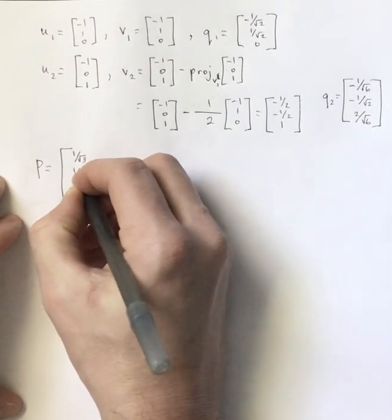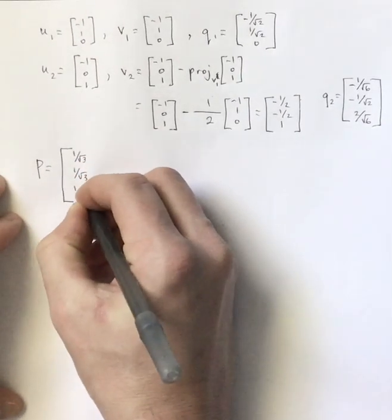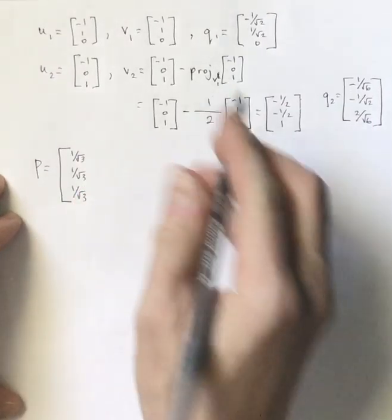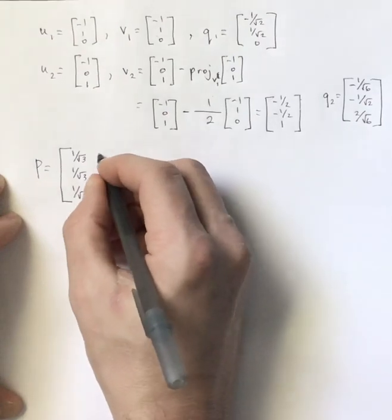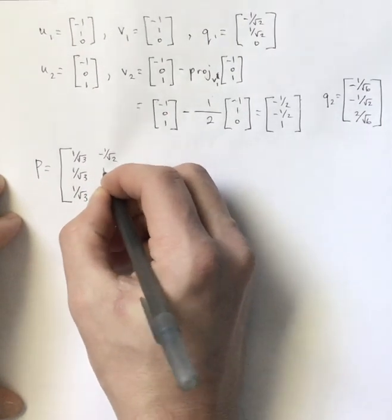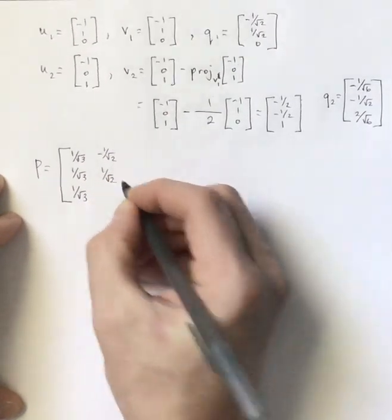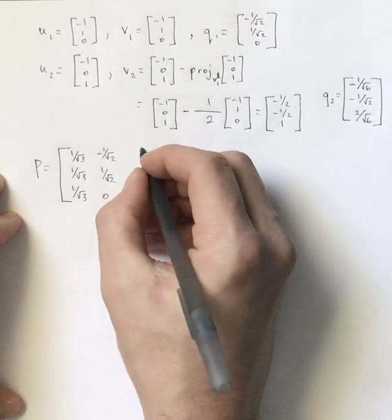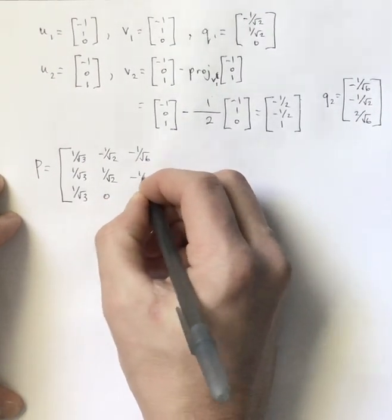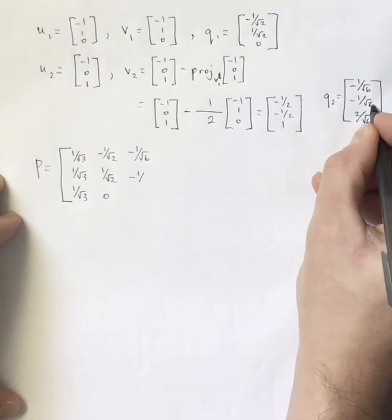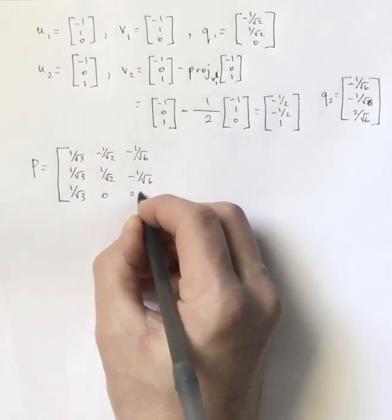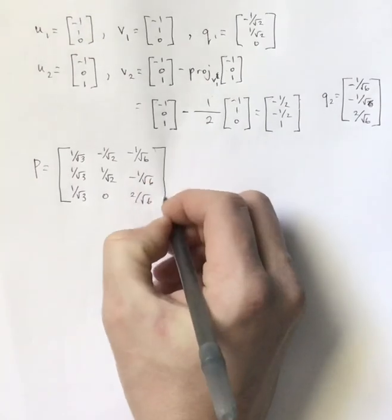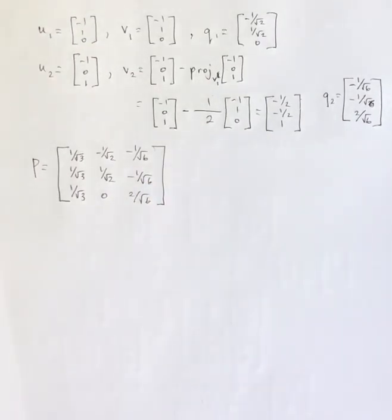So the matrix, I'll just put them in the order that we got them. 1 over root 3, 1 over root 3, 1 over root 3. That was from the lambda equals 8, and then I'll put these in as well. 1 over root 2, negative 1 over root 2, 1 over root 2, 0, and negative 1 over root 6, negative 1 over root 6, and 2 over root 6. So that is my matrix P, and that's what we were looking for.